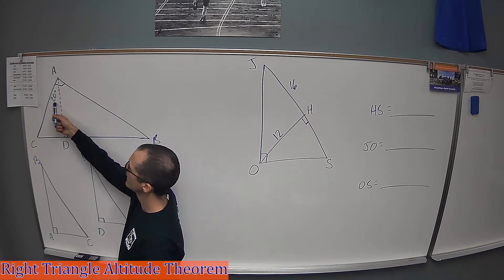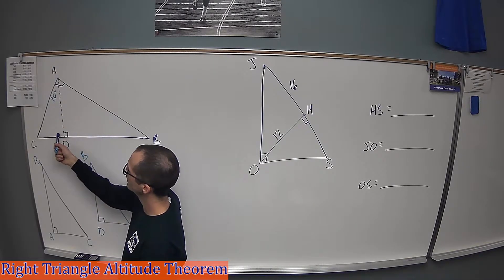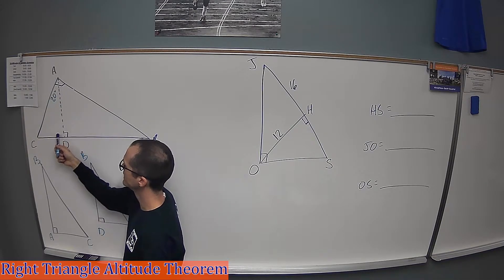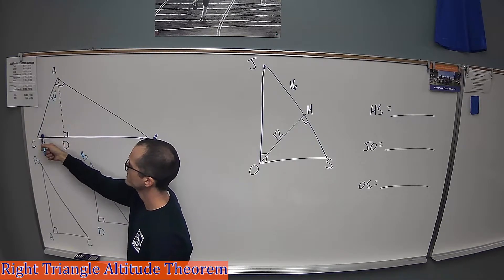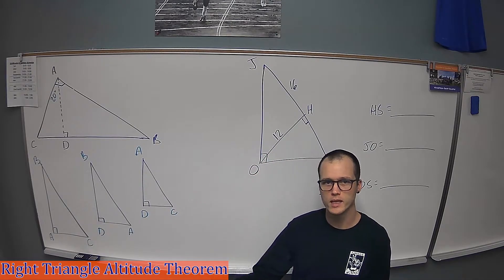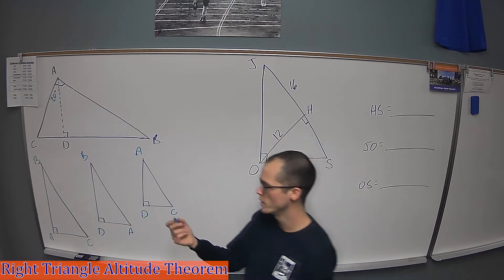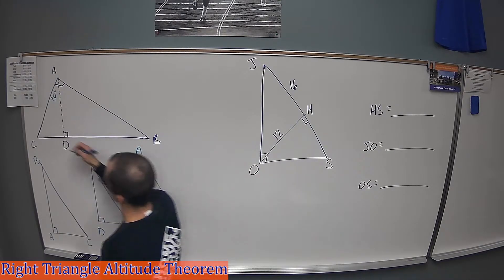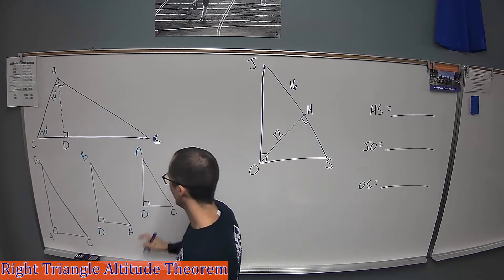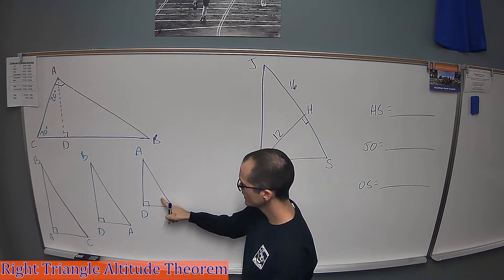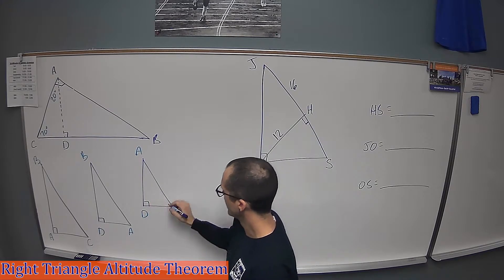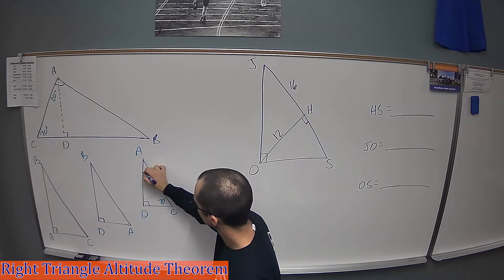If angle CAD is 20 degrees and angle ADC is 90 degrees, that means angle C must be 70 degrees, because 20 plus 90 plus 70 equals 180 degrees. So in the small triangle, angle C is 70 degrees and angle CAD is 20 degrees.